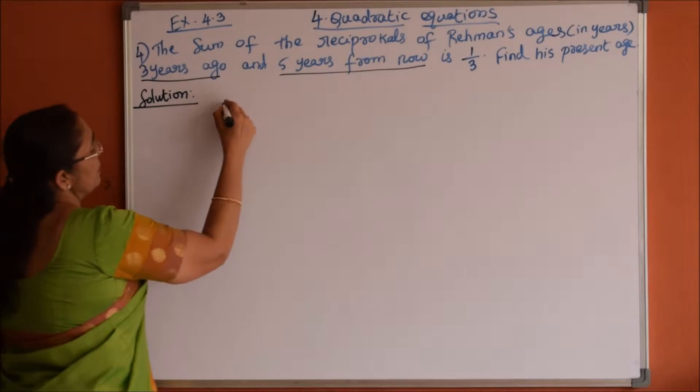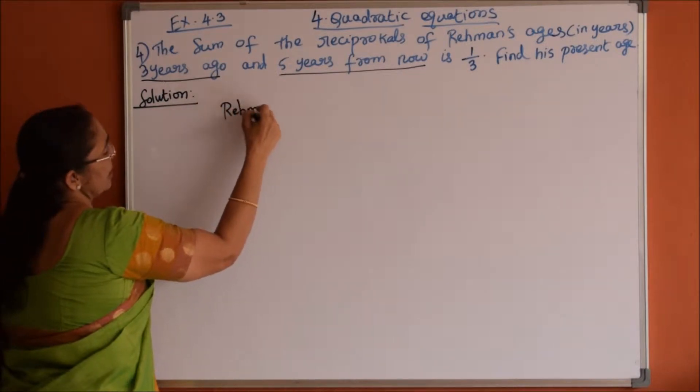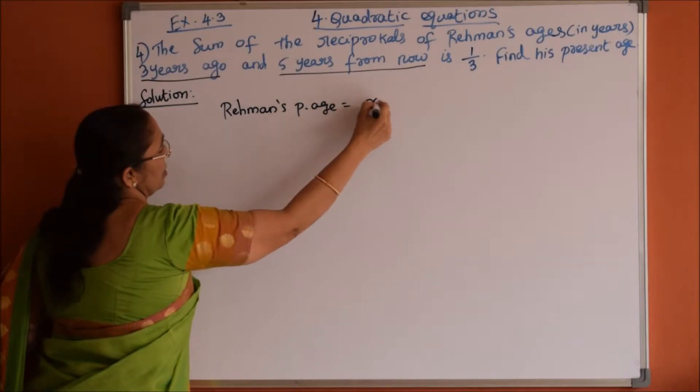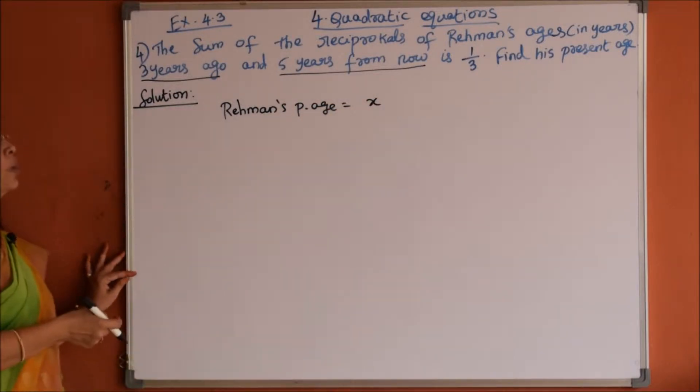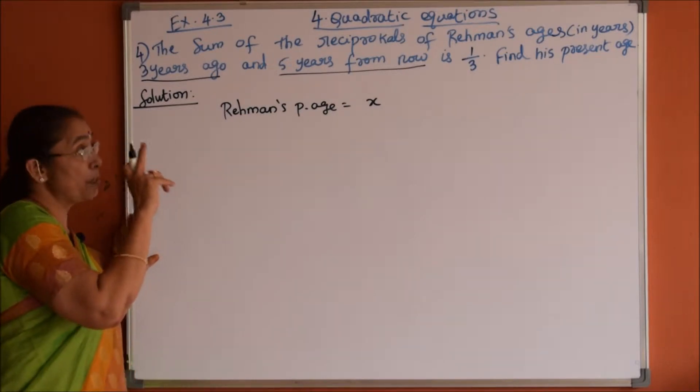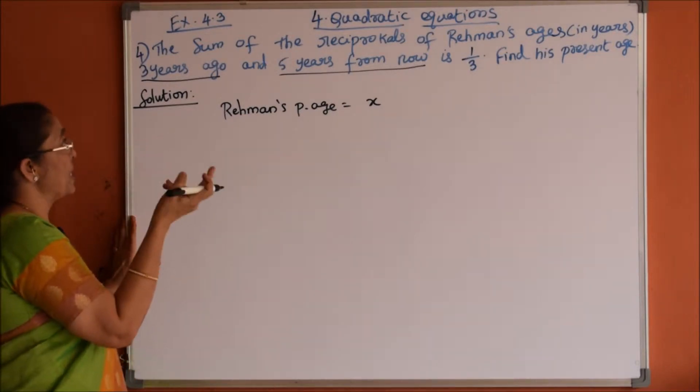Let Rahman's present age as x, so his present age is x years. Now what is the condition? Sum of the, find reciprocals of what? Rahman's ages.